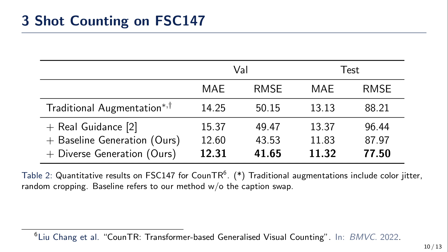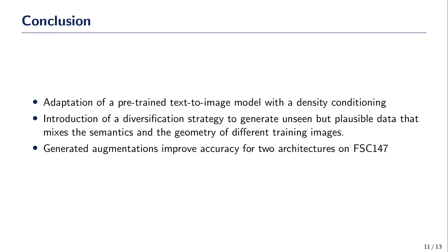We also achieve superior results on the CountTr architecture. To conclude, we propose a method to generate augmentations for few-shot counting. We adapt a pre-trained text-to-image model with a density map condition. We introduce a diversification strategy to generate unseen but plausible data that mixes the semantics and the geometry of different training images. Our generated augmentation improves accuracy for two architectures on FSC147.